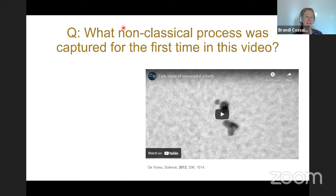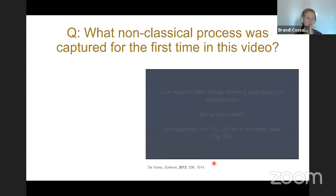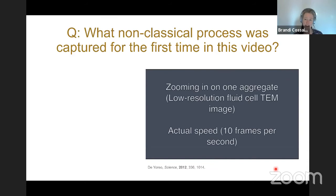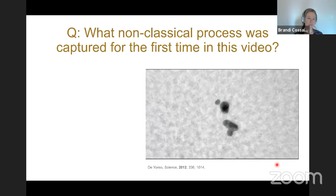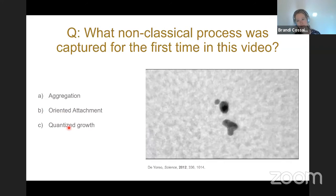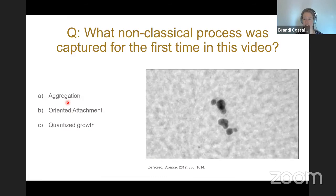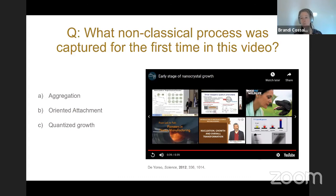Time for another fun question and video. What non-classical process was captured for the very first time in this video? This is from Jim De Yoreo's lab. In this part of the video you see nanoparticles coming into focus in a liquid cell TEM. The options are aggregation, oriented attachment, or quantized growth. Based on our discussion, it's evident this shows the first example of live-captured oriented attachment - an individual crystal being attracted through some dipolar force to an adjacent nanocrystal, then attaching, rotating, and eventually generating a perfect single crystal.